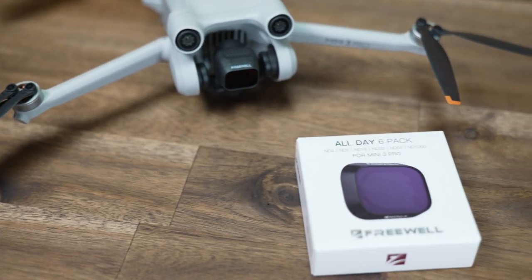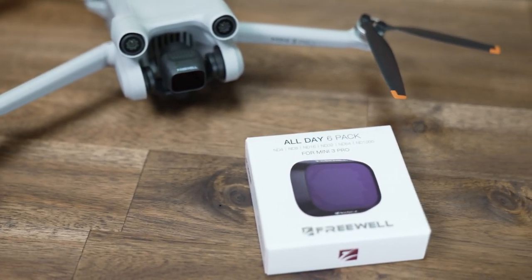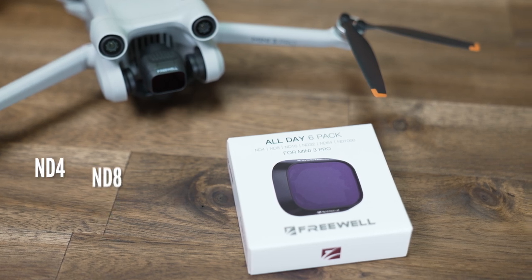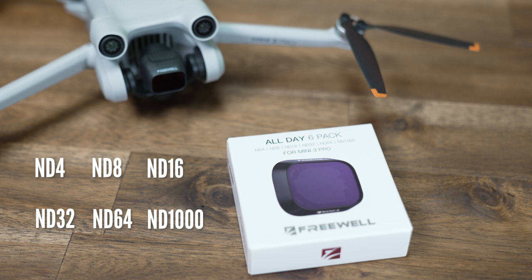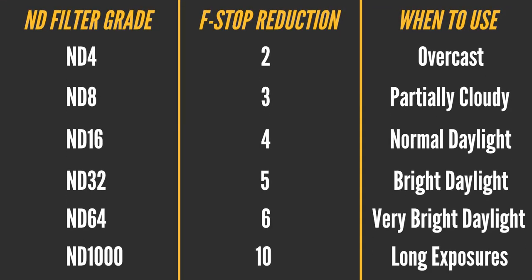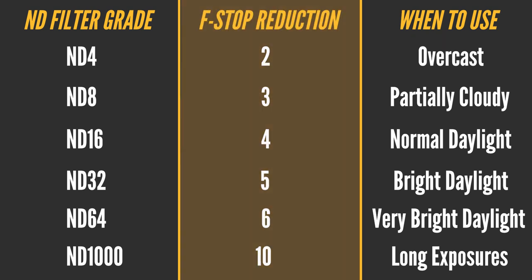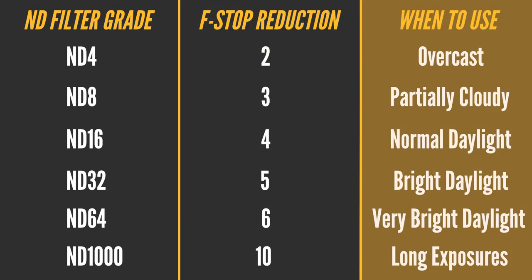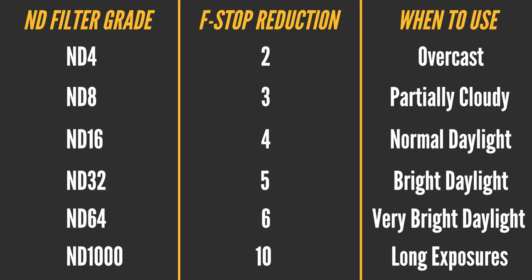In this all-day six-pack, the ND filters you get are ND4, 8, 16, 32, 64, and 1000. There's a list on screen you can pause and grab that gives you an idea of the number of f-stops that the different grades can account for, as well as typical scenarios that each grade of ND is suited for.